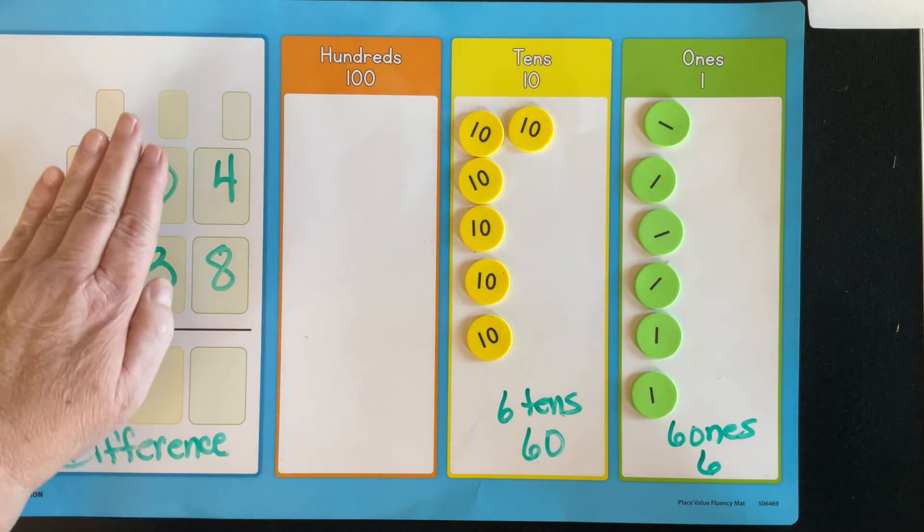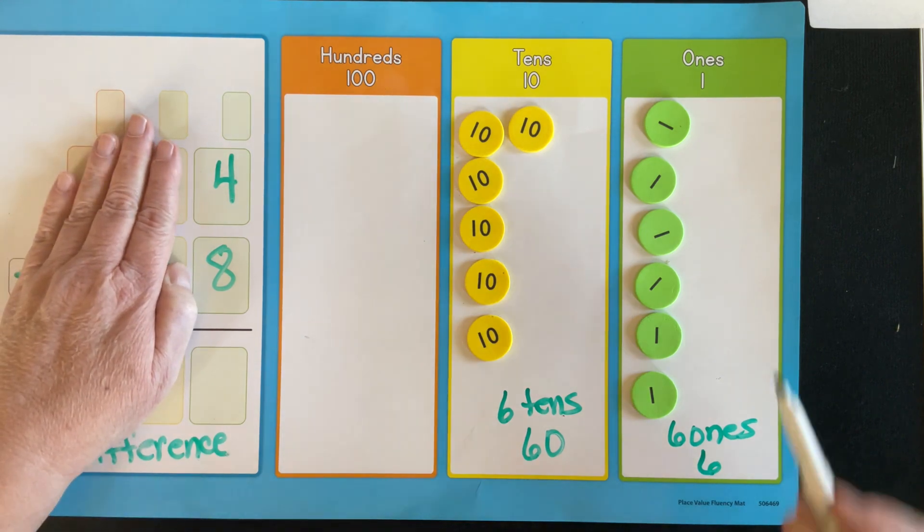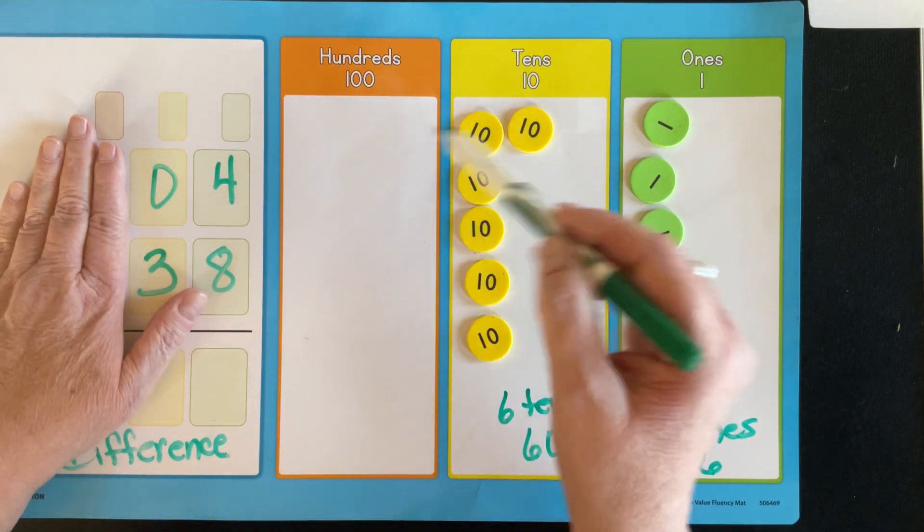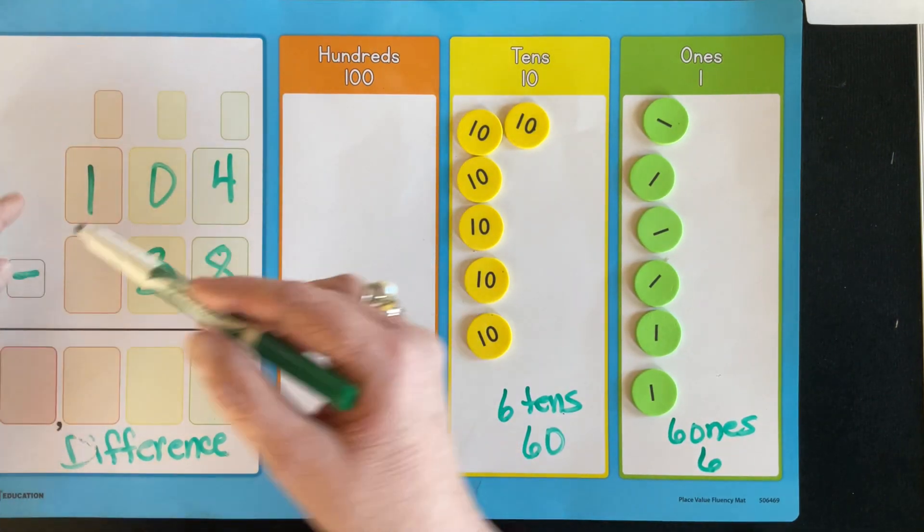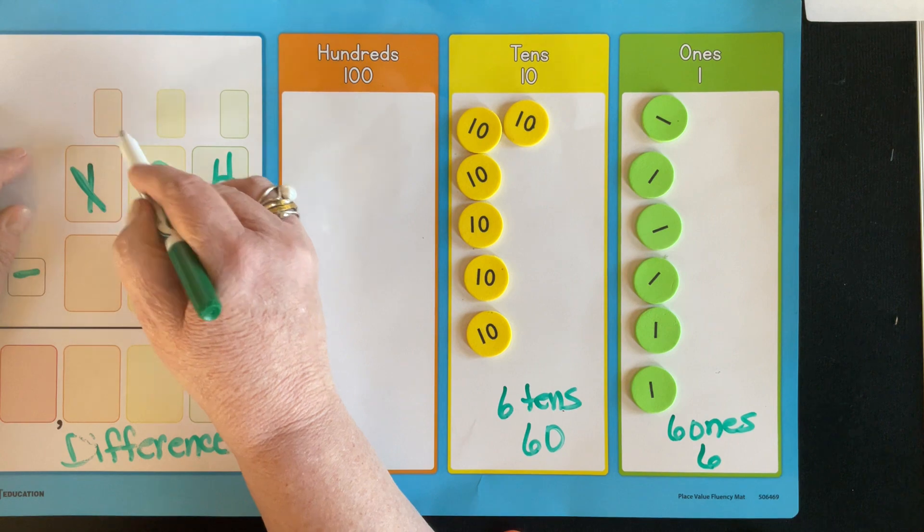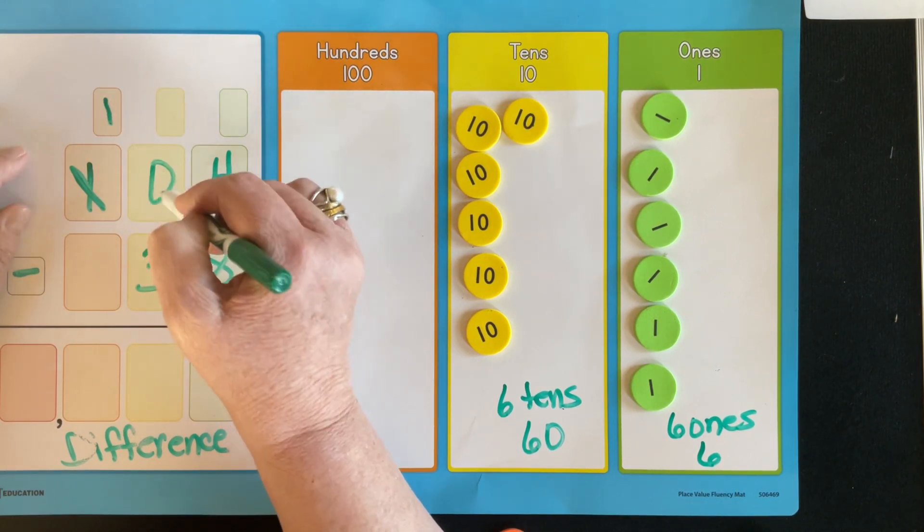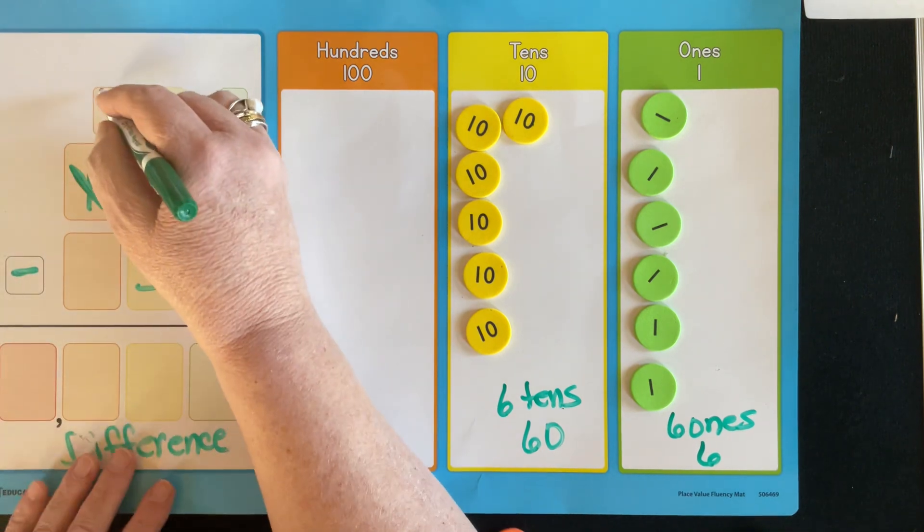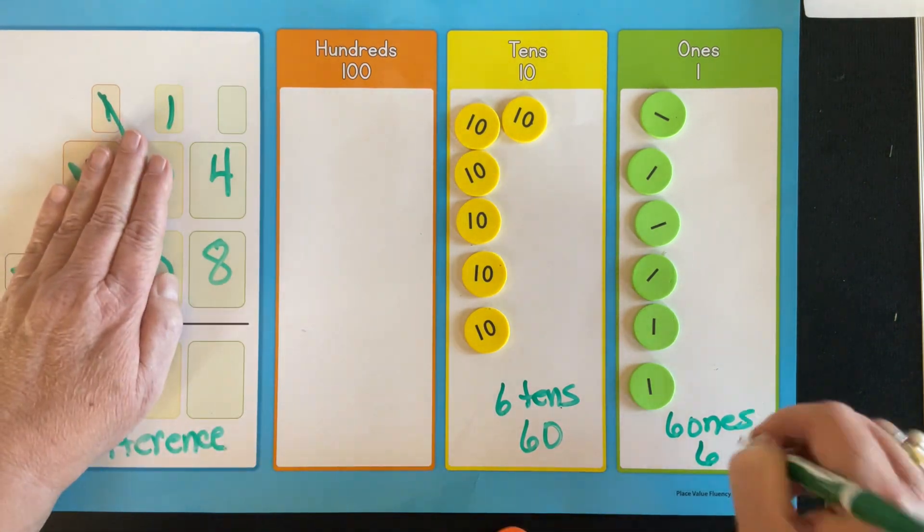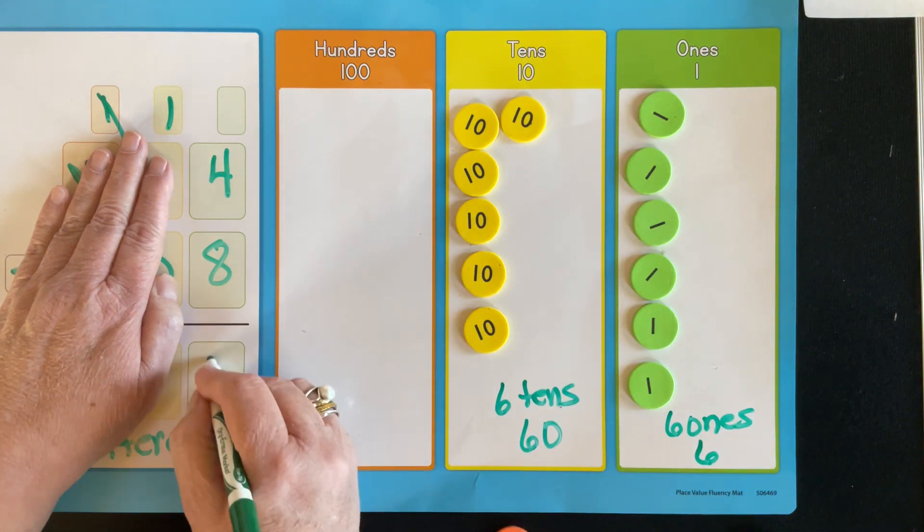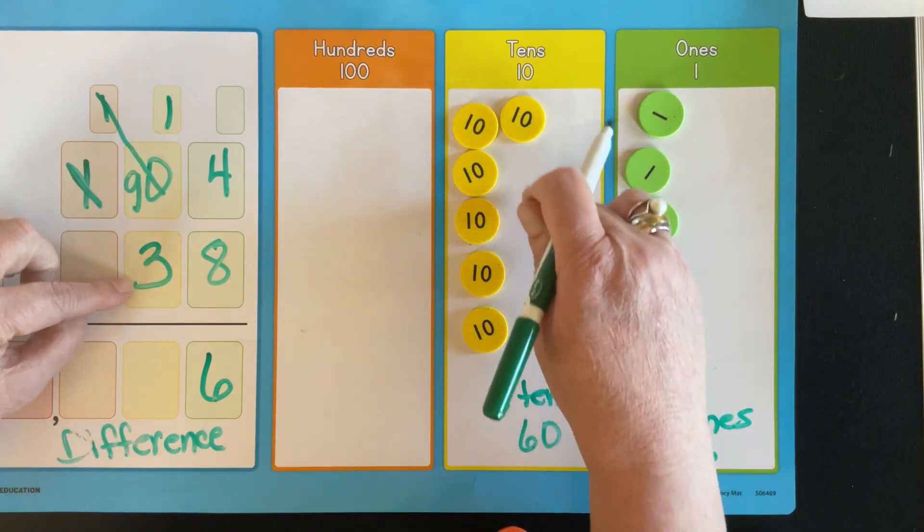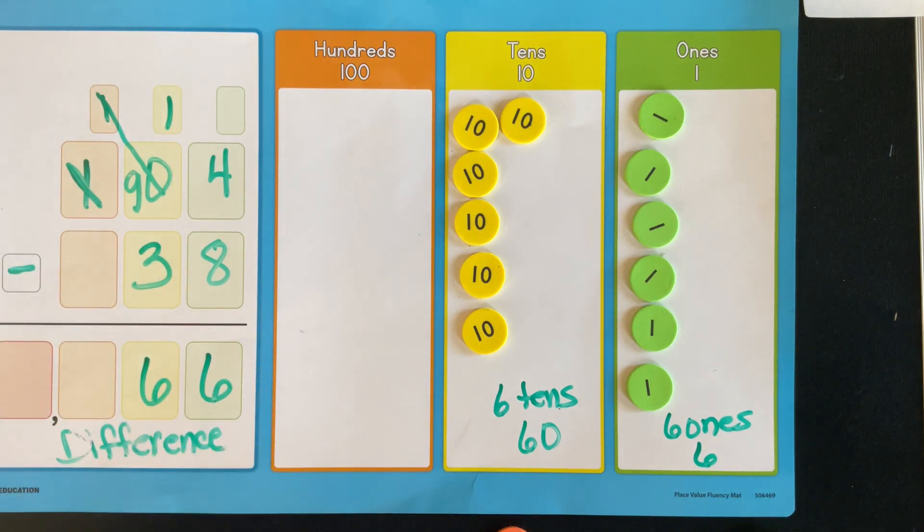Now when we go back over to here, this is where it's going to become interesting for kids to really understand. Remember, we only had four, we couldn't take away eight. So we wanted to go next door and take a 10 and exchange it, but we didn't have a 10. So we went all the way over here and we changed that 100 into 10 10s. So now I can take one of those 10s and make it a nine and trade it. And now I have 14. So we started with 14. And remember when we removed eight, we ended up with six ones. And then we had those nine 10s here and we removed three of those 10s. And then we ended up with six, which the difference is 66.